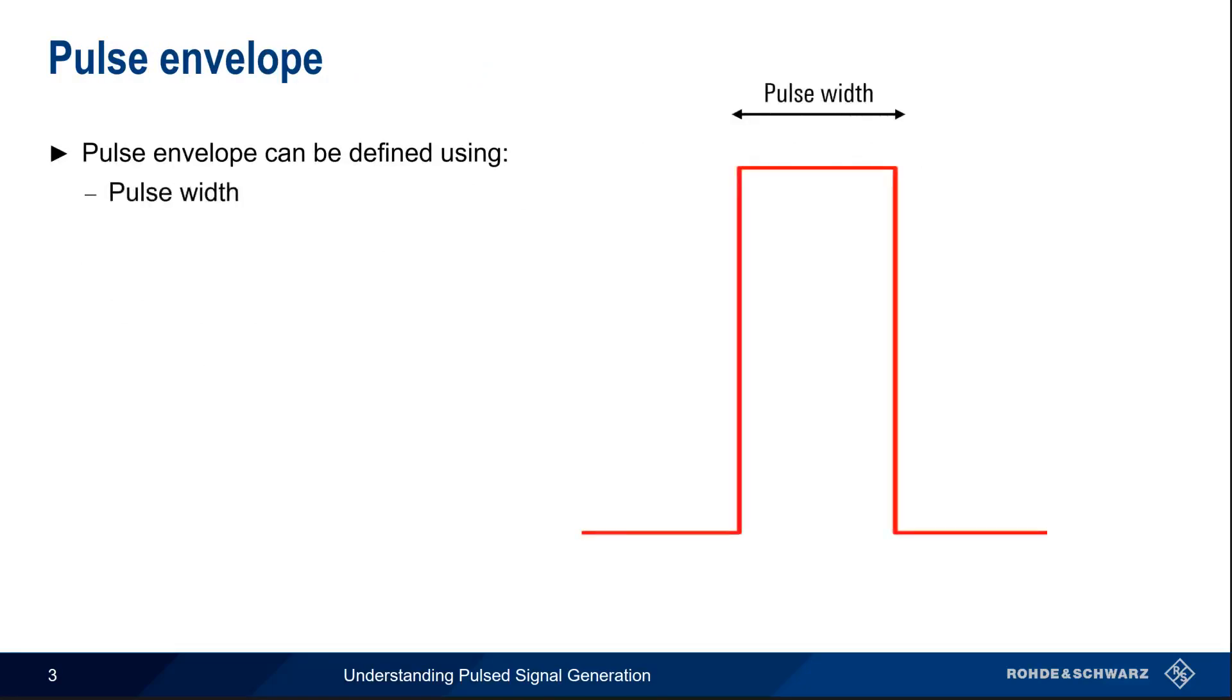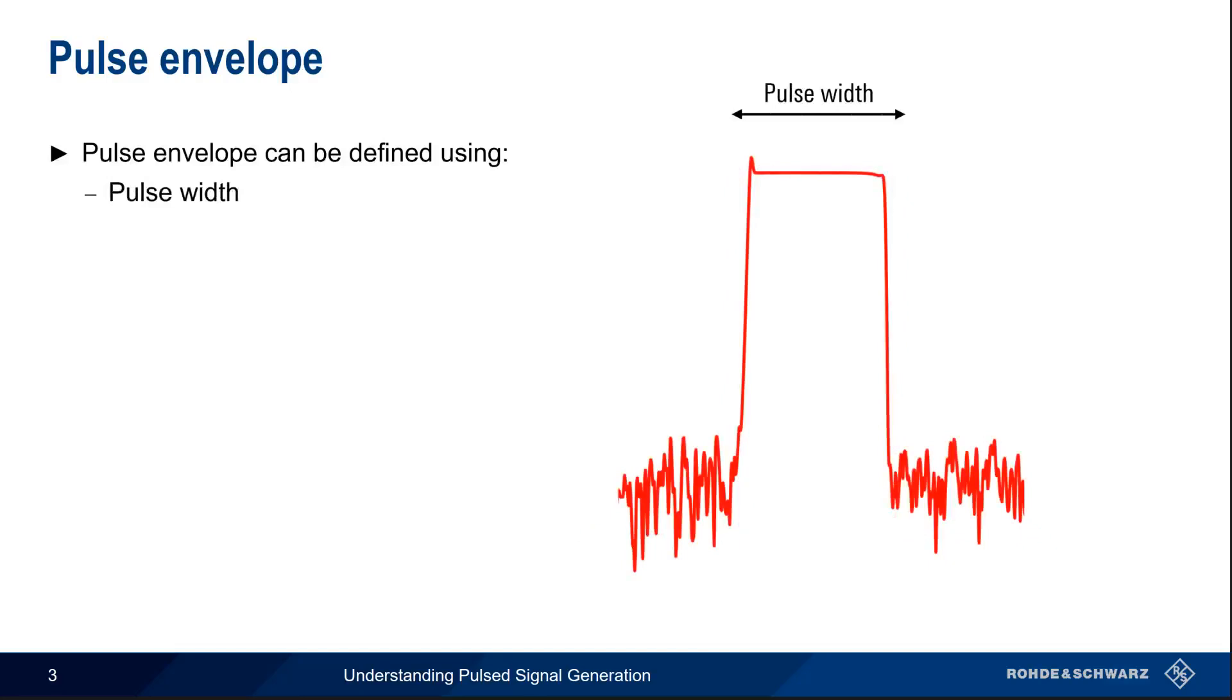Let's start with pulse envelope. How do we define or quantify a pulse envelope? Although we've been showing pulses having simple rectangular envelopes that can be defined using only pulse width, real pulses have shapes that are not perfect rectangles. This means that we either define, or our generator defines, pulse rise time and fall time.